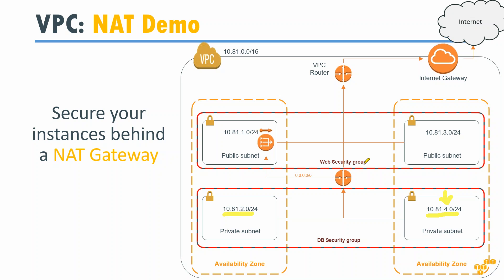I also have a security group for my database and a web security group for the web layer — port 80 and port 22 are allowed there. For the database security group, only my web security group can access it, and it doesn't have any direct internet access. To provide internet access — for administration or copying data — I start a NAT instance, and I create a route that sends all internet-based traffic from my DB security group to that NAT instance, which has an elastic IP.